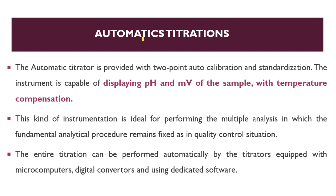Next is automatic titration. An automatic titrator will be there, provided with two-point auto calibration and standardization. This type of instrument will display the pH or voltage of the sample and the temperature as well. It is very ideal for performing multiple analyses — when measuring two to three samples, we can go for this automatic method, and as a quality control parameter also. The titration is performed automatically by the titrator equipped with a microcomputer, a digital converter, and dedicated software. Here we can use computers and digitally see our changes.